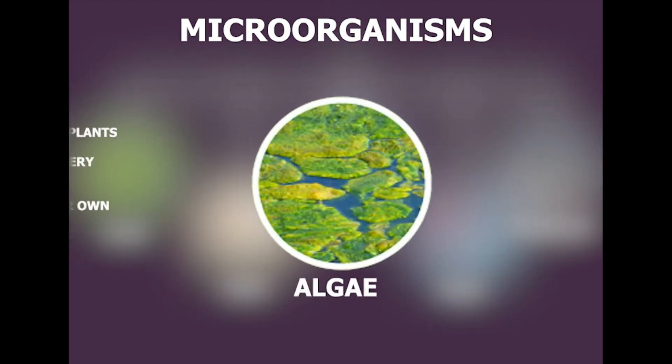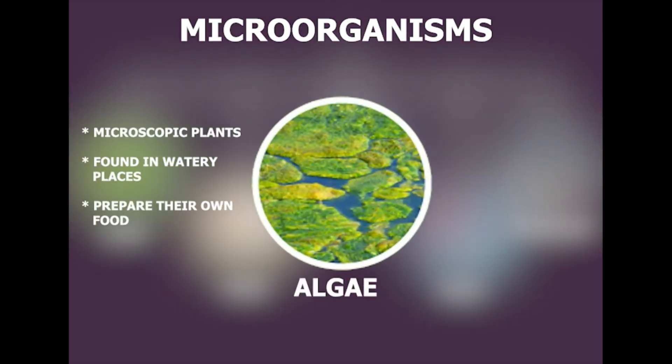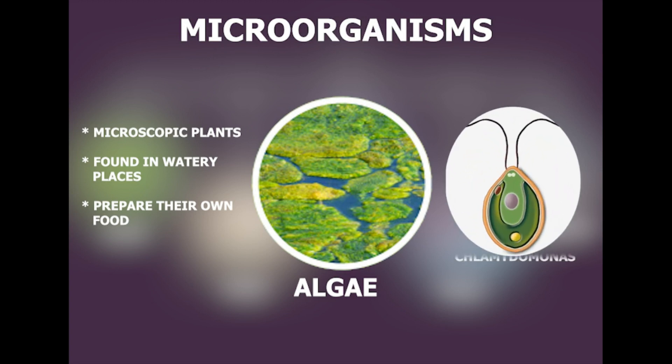Algae are microscopic plants which prepare their own food and are found in watery places. Chlamydomonas is a unicellular algae. Its cell wall is made of cellulose and the cell contains chlorophyll pigment.